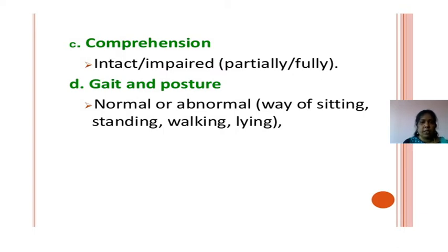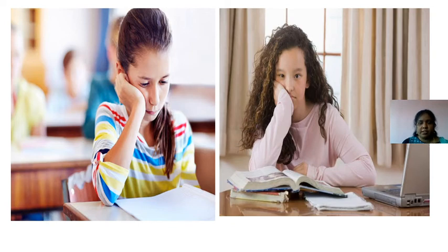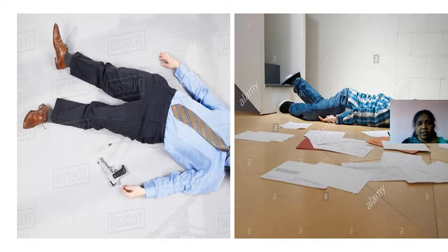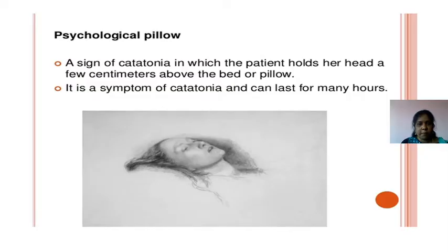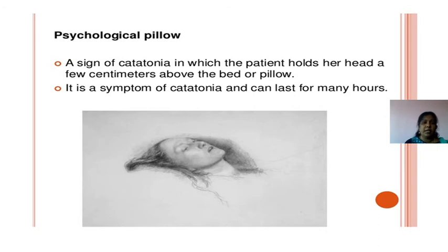Gait and posture: normal or abnormal — the way of sitting, standing, walking, or lying. We can observe from the posture signs of depression or anxiety. Psychological pillow is one type of catatonic behavior — a sign of catatonia in which the patient holds their head a few centimeters above the pillow, thinking it is resting, lying in the air. This symptom of catatonia can last for many hours.